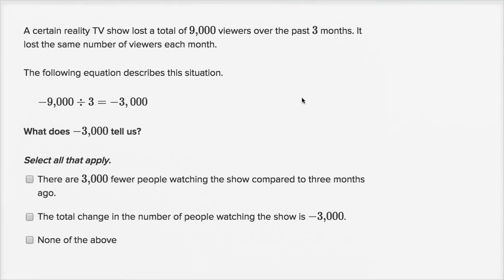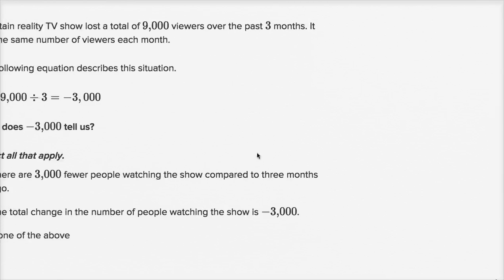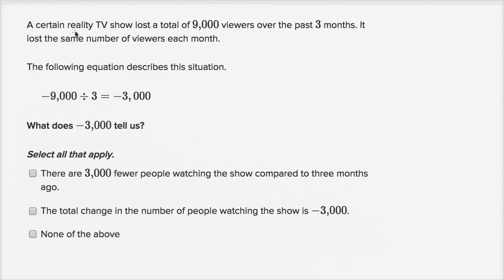Let's do one more of these. A certain reality TV show lost, so we're losing, so a negative might be a nice way to represent the loss. Lost a total of 9,000 viewers over the past three months. Over three months. It lost the same number of viewers each month. The following equation describes the situation.